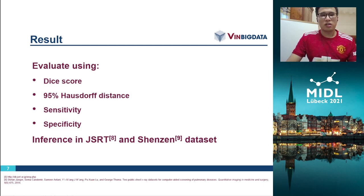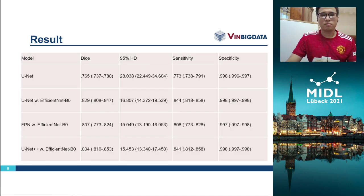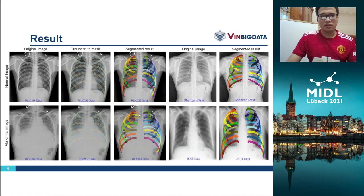We also try to infer the outputs on the JSRT and VinDr-CXR datasets. In this table, you can see that U-Net with EfficientNet-B0 backbone achieves the highest DICE score, which is 83.4%. And this is the output of our model.